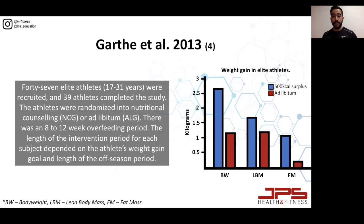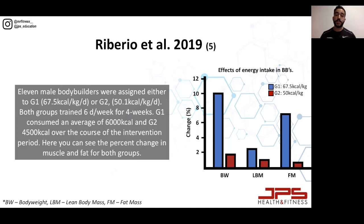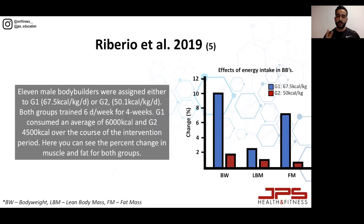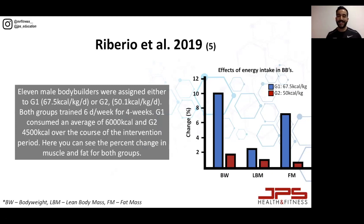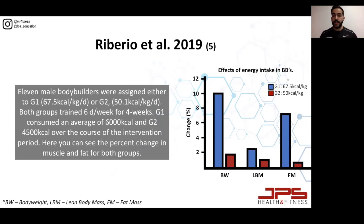This shows that fat cells are more sensitive to calories than muscle cells are — if they weren't, the group eating more food would have gained a lot more muscle and wouldn't have gained as much fat. We have another study conducted in 2019 by Riberio on advanced IFBB-level bodybuilders. One group consumed 67.5 calories per kilogram of body weight — on average 6,000 calories per day for four weeks. The second group consumed an average of 4,500 calories.